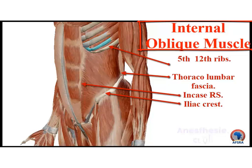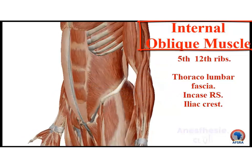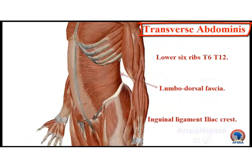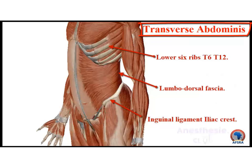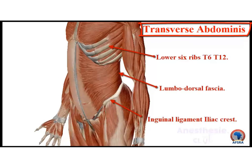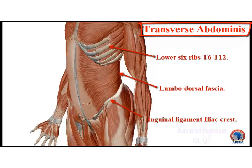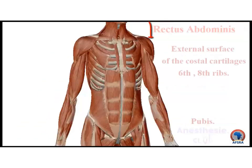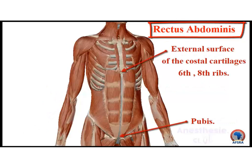The transversus abdominis muscle is the innermost muscle. It forms anteriorly a fascia joined with the aponeurosis of the internal oblique and passes posterior to the rectus abdominis. Posteriorly attached to the lumbodorsal fascia, it is attached inferiorly to the inguinal ligament and the iliac crest, and superiorly attached to the lower sixth ribs, T6 to T12.